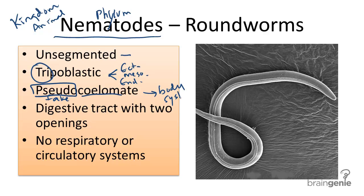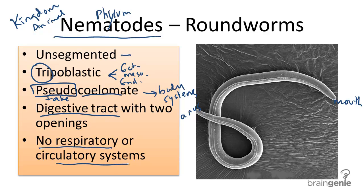Roundworms have a digestive tract with two openings, a mouth and an anus. They also have no respiratory or circulatory systems, making them close to one of the most primitive sets of worms, though they are bilaterally symmetrical.